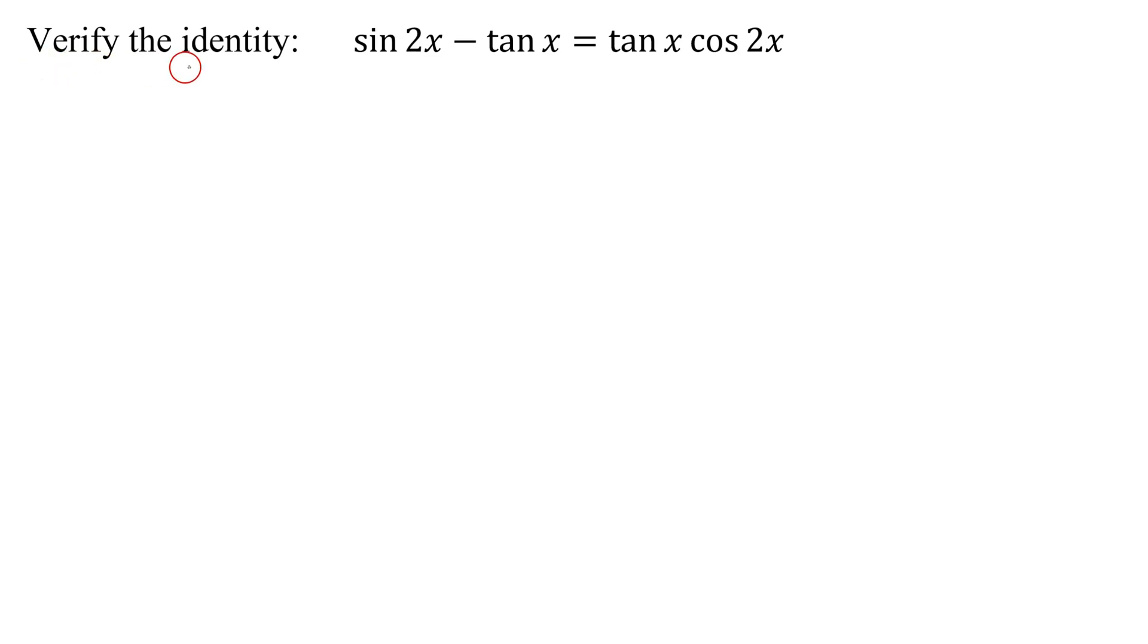In this example, I need to verify the identity: the sine of 2x minus the tangent of x equals the tangent of x times the cosine of 2x.